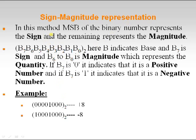In sign magnitude representation, the MSB of the binary number represents the sign and the remaining bits represent the magnitude. For an 8-bit number, B7 is the sign and B6 to B0 is the magnitude representing the quantity. If B7 is 0, it indicates a positive number; if B7 is 1, it indicates a negative number.